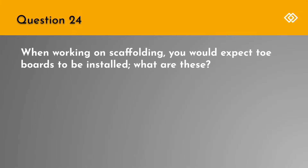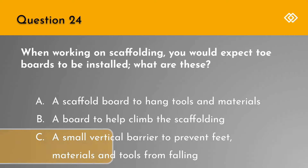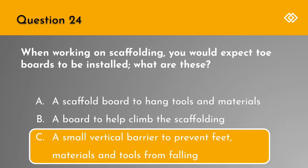Question 24. When working on scaffolding, you would expect toe boards to be installed. What are these? A. A scaffold board to hang tools and materials. B. A board to help climbing the scaffolding. Or C. A small vertical barrier to prevent feet, materials and tools from falling. The correct answer is C. A small vertical barrier to prevent feet, materials and tools from falling.